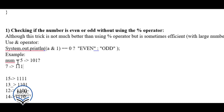If we AND the binary of 7 (1 1 1) with 1, we get 1, confirming it's odd. If we AND 1 1 0 0 (twelve) with 1, we get 0, confirming it's even. So instead of using mod 2, we can write: if (A & 1 == 0) print even, else print odd.